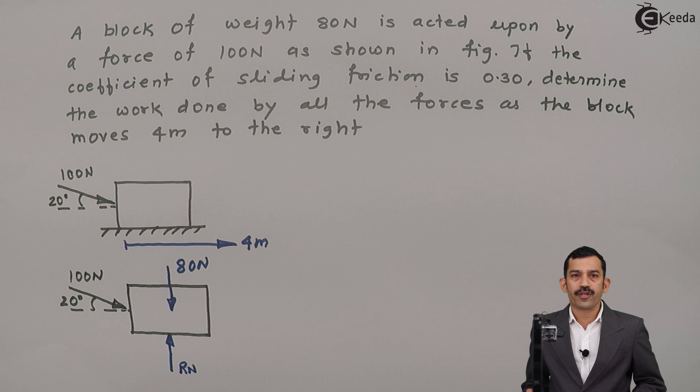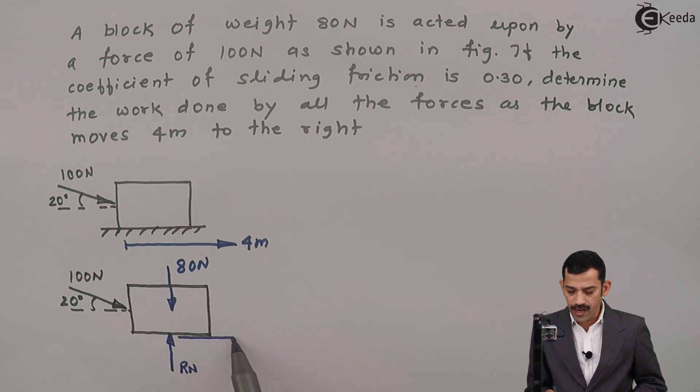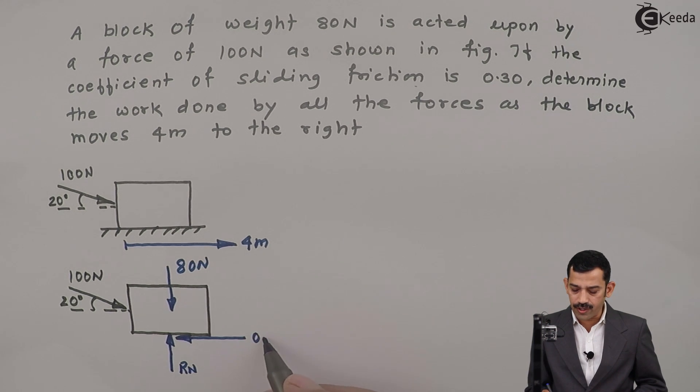As the block moves in the rightward direction, frictional force always opposes the motion. That means frictional force acts at contact surfaces and in the opposite direction of motion. Mu is given as 0.3. Therefore, frictional force is 0.3 RN.